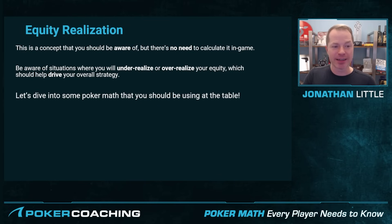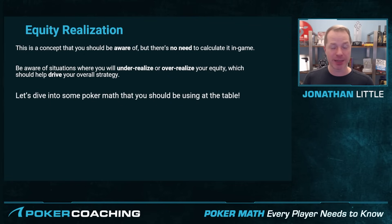I realize these three concepts — equity, expected value, and equity realization — are kind of nebulous topics, but they are very important to keep in mind as we move forward. Because next we're going to be discussing pot odds, which is something you actually do need to be able to figure out at the table.